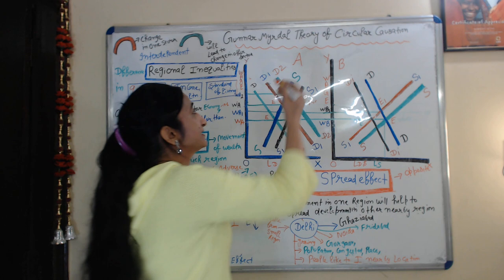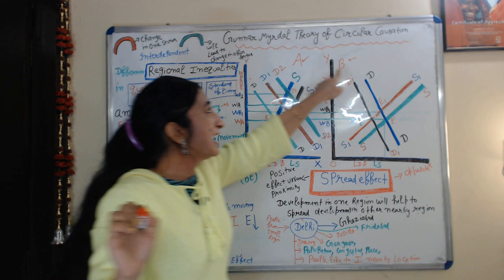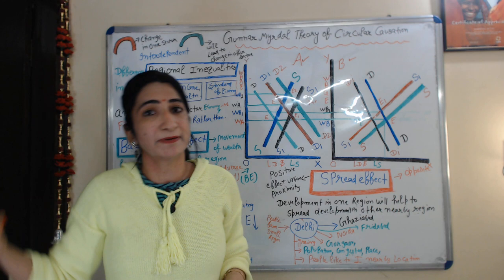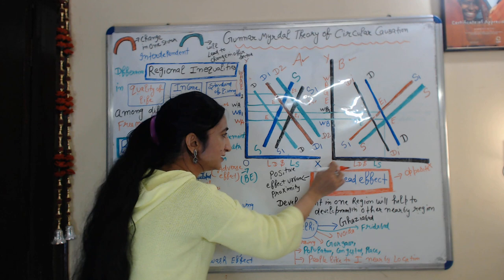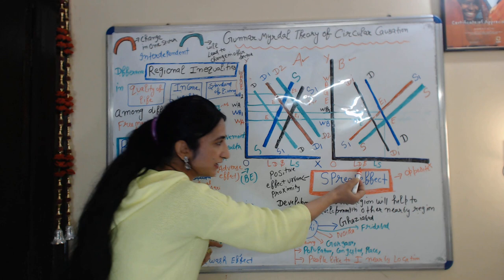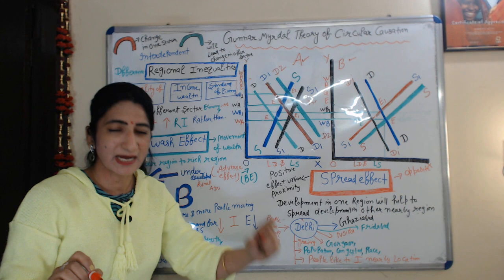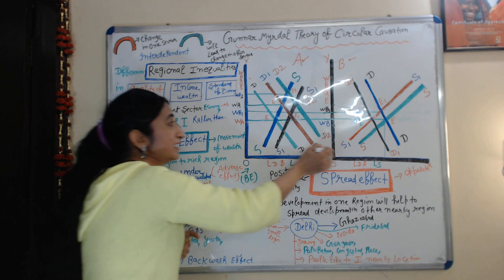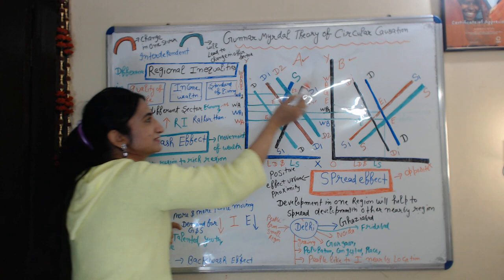In this diagram, we take two regions: region A and region B. A is the developed region and B is the underdeveloped region. This A diagram represents the developed region and this B diagram represents the underdeveloped region. On the X-axis in both diagrams, we take labor demand and labor supply. On the Y-axis — the vertical side — in both diagrams, we take wage rate.